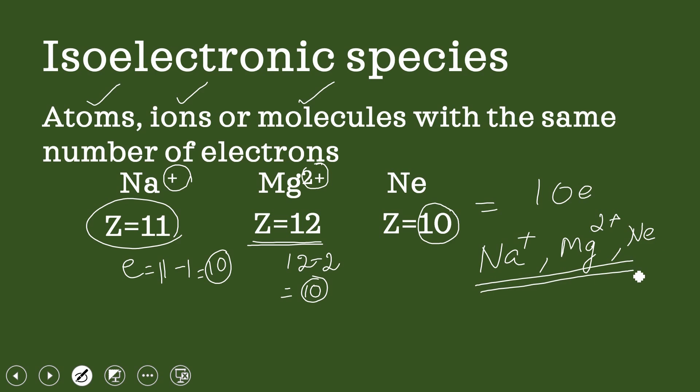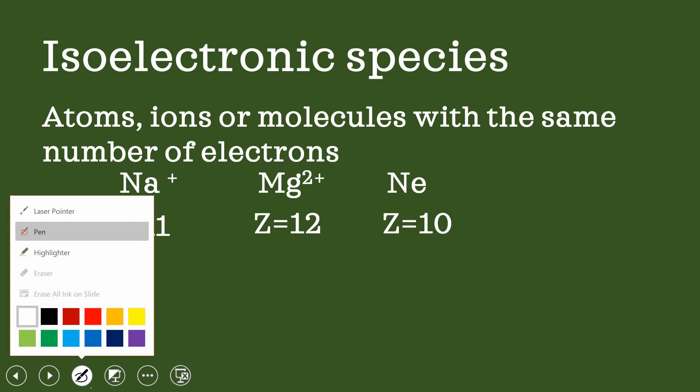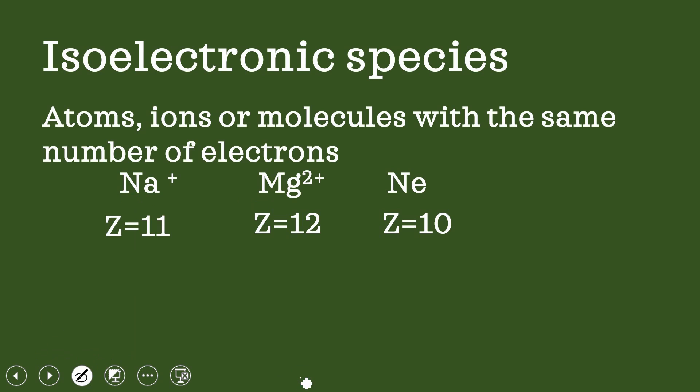What are isoelectronic species? They are species in which the number of electrons are the same. Let us see the next one.